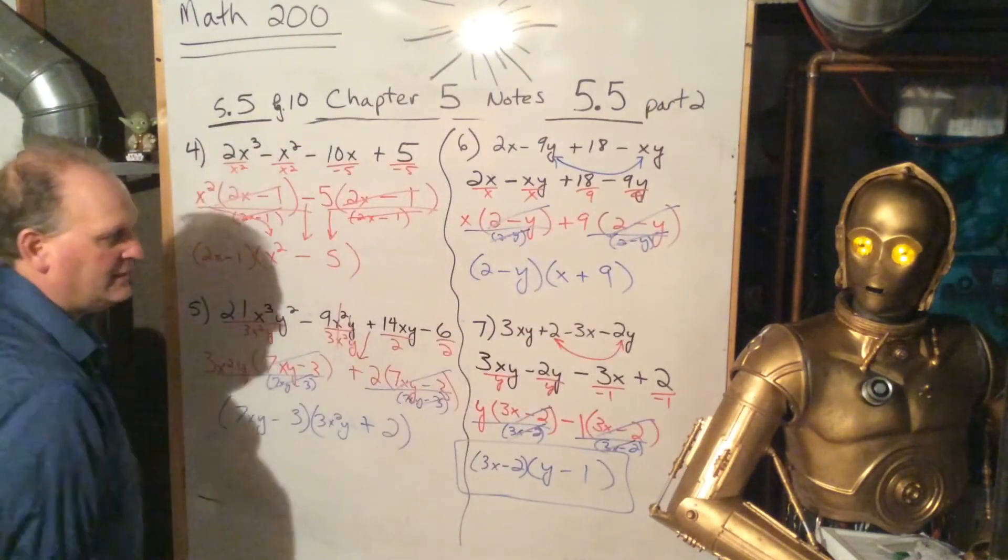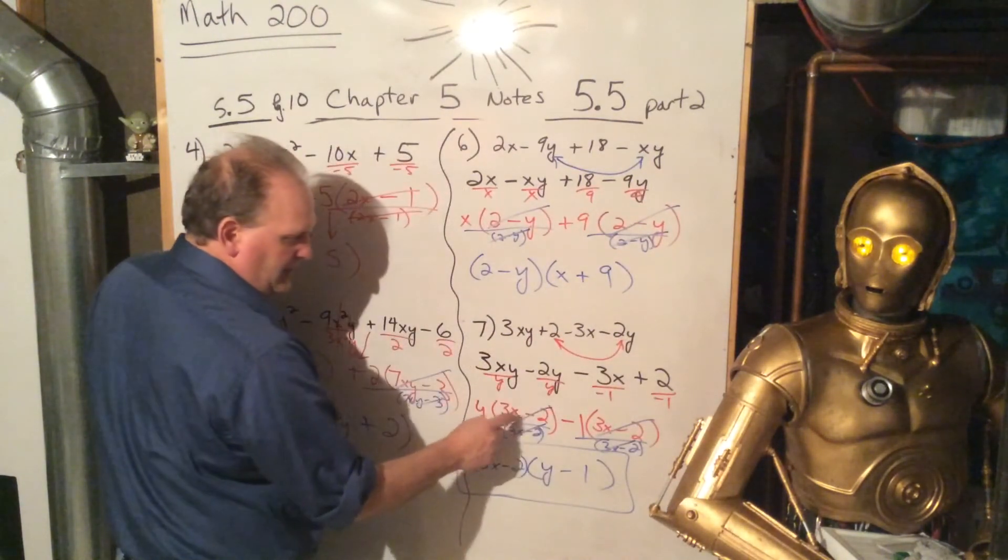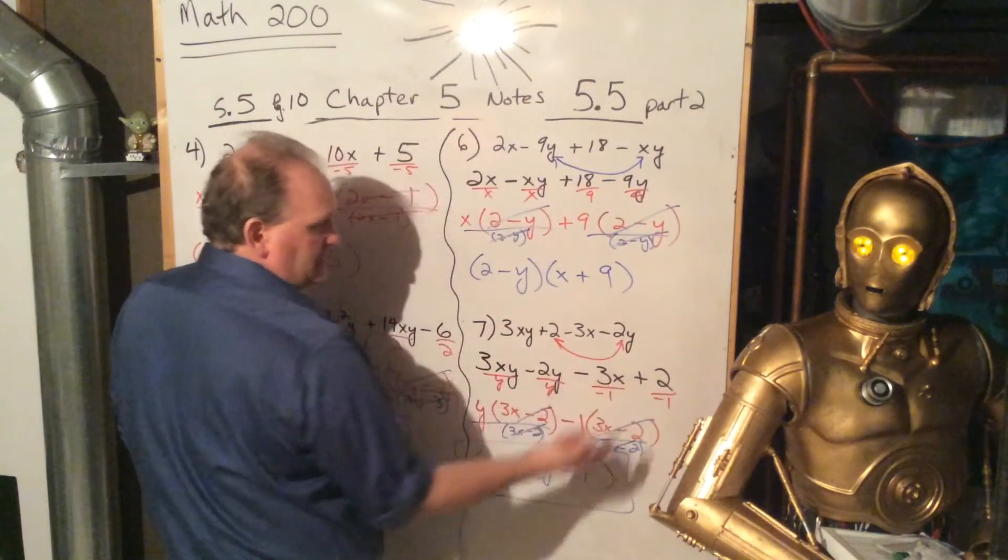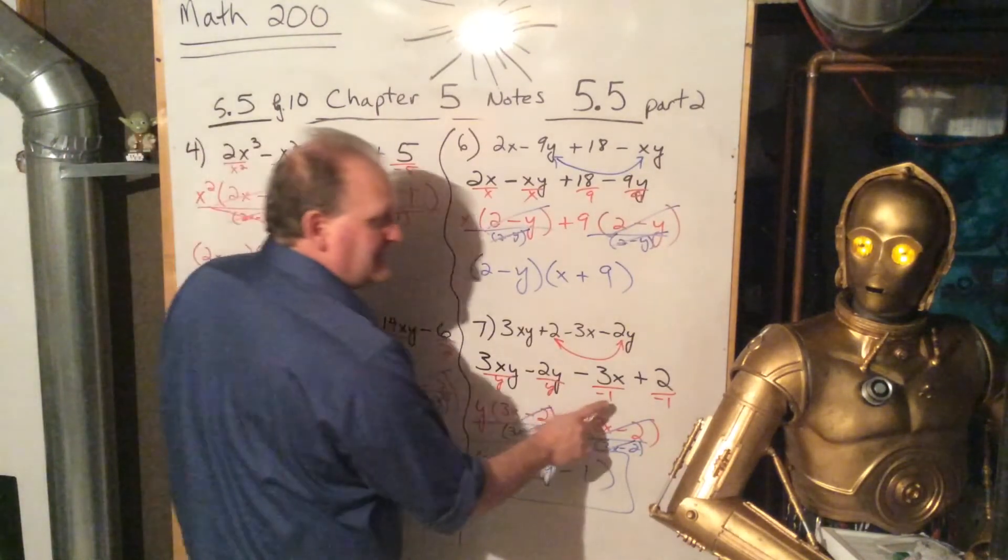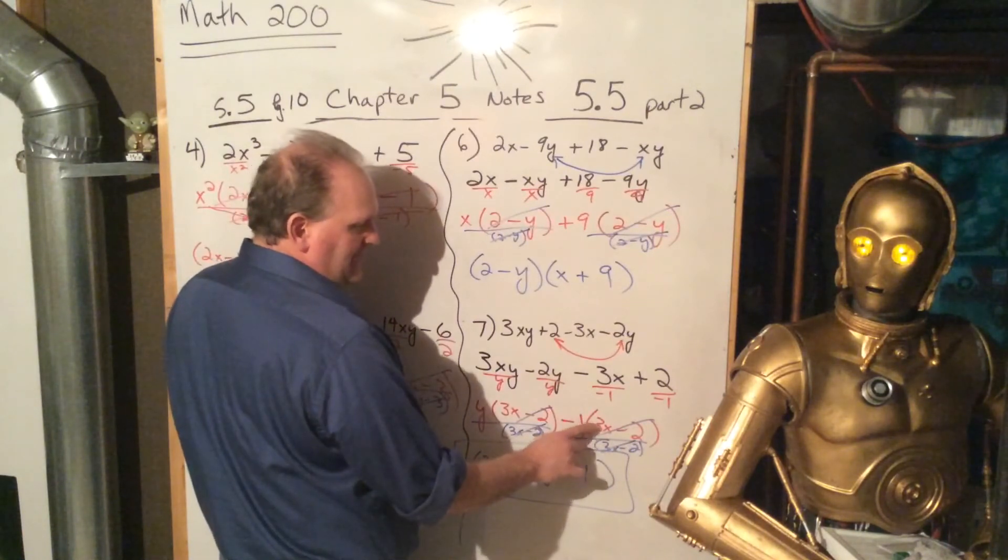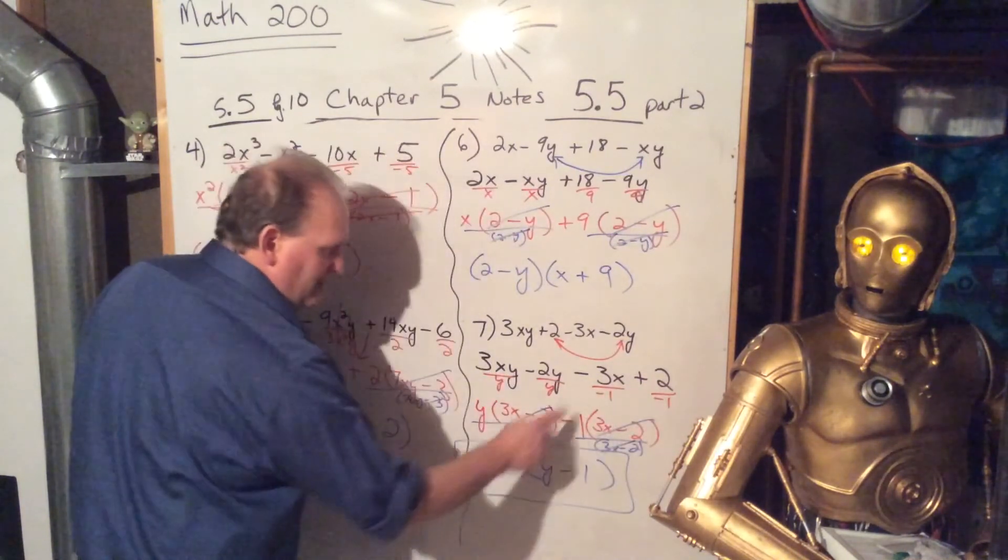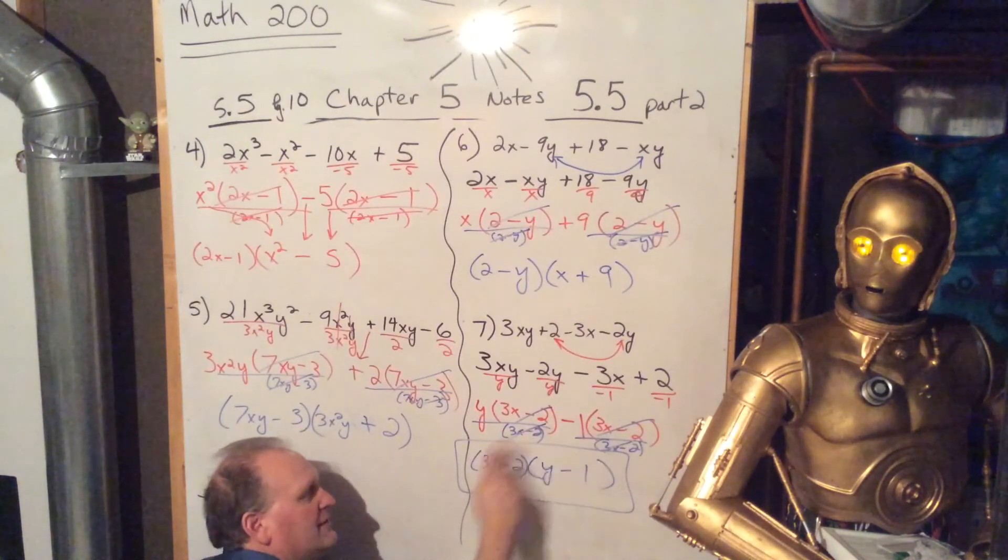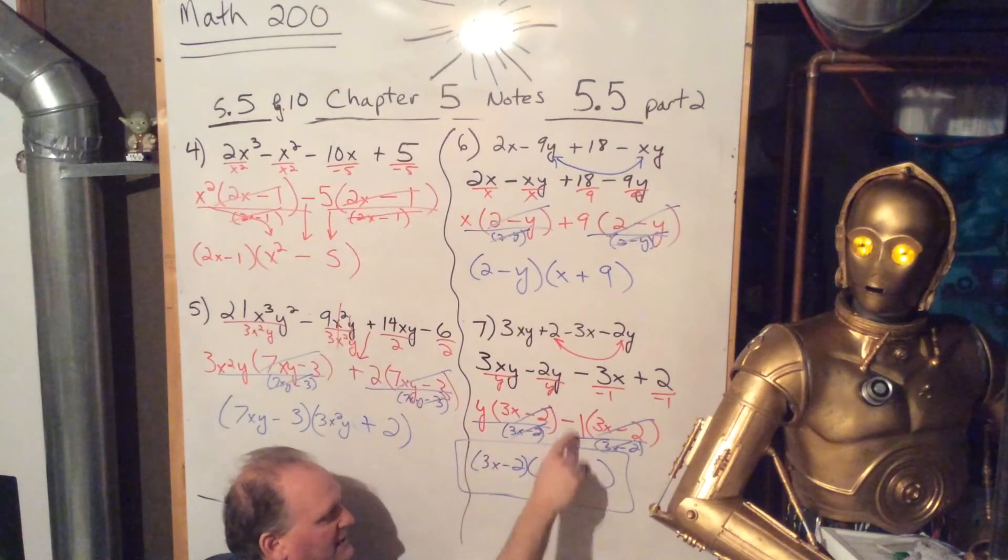And number 7, we switch up the 2 and the minus 2y, we factor a y out, we end up with 3x minus 2, we factor a negative 1 out. Again, they're relatively prime, 3x and 2 don't have anything in common, so 1 is the greatest common factor. But we actually factor out a negative 1, because we want the 3x minus 2s to match. If I just factor out 1, it would say negative 3x plus 2, and then it wouldn't be the same, and I couldn't finish the problem. So, I divide out a negative 1, I end up with 3x minus 2, factor that out front, and then they cancel off. We're left with y minus 1.